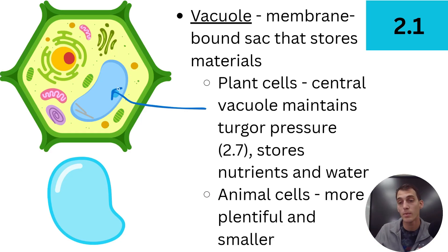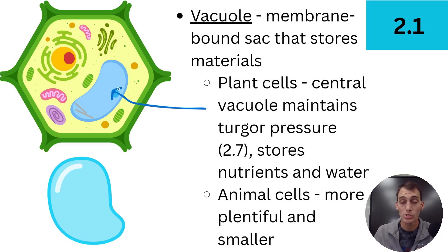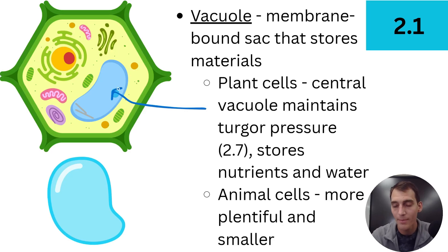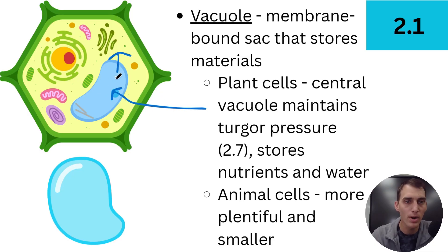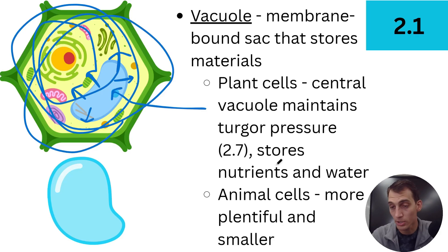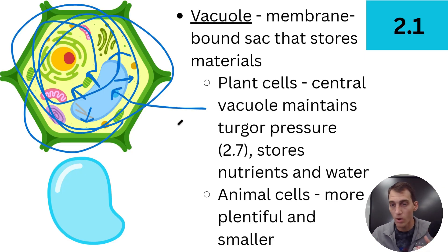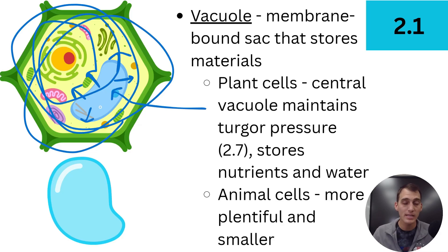In Topic 2.7, we're going to talk about osmoregulation and tonicity — basically controlling how much water the cell takes in and outputs. Plants always need to have water coming in and need extra high amounts of water in the central vacuole so that this bubble exerts pressure on the cell wall, which is called turgor pressure. The central vacuole is responsible for taking in a ton of water to exert pressure on the cell walls and keep the plant cell rigid — and thereby the plant itself rigid. That's how plants are able to stand up without bones.